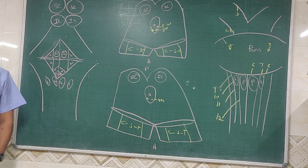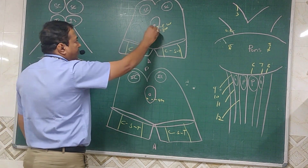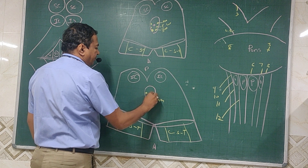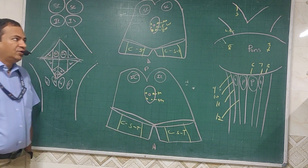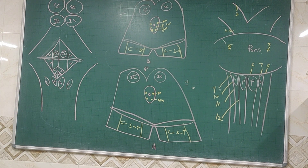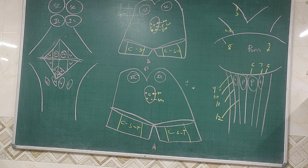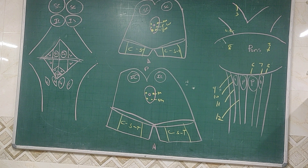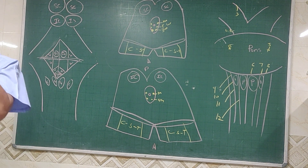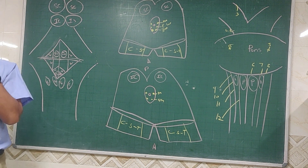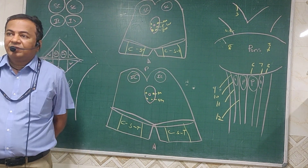The fifth cranial nerve has a total of four nuclei. There is one nucleus in the midbrain and that is called the mesencephalic nucleus of the fifth nerve. These neurons are the only first-order neurons which are directly situated inside the central nervous system. They receive proprioception of all the muscles of the head, face, and neck — that proprioception goes to the mesencephalic nucleus of the trigeminal.